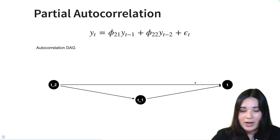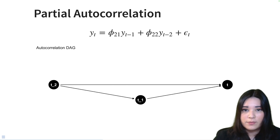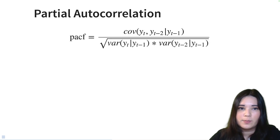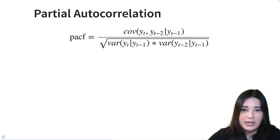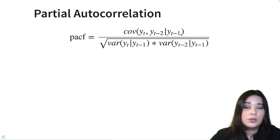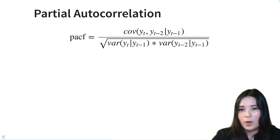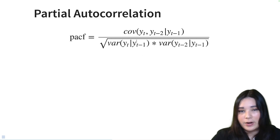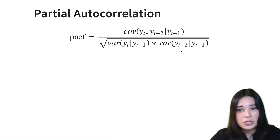So if we want to isolate the direct effect rather than the total effect, we need to do a little bit of calculations. In order to look at the partial correlation, we're going to look at the covariance between y(t) and y(t-2) already taking into account the effect of y(t-1) — in other words, subtracting out the effect of y(t-1). We're then going to scale that by the variance of y(t) already accounting for y(t-1) and the variance of y(t-2) accounting for y(t-1).